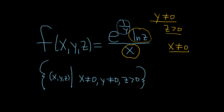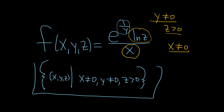Whenever you put a comma like this, there's an implied 'and.' You could put the word 'and' if you like — a comma is much easier than writing it twice. So it's read as: x is not equal to 0, and y is not equal to 0, and z is positive. It's the set of all ordered triples in space such that these conditions are true. I hope this video has been helpful.